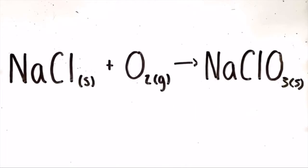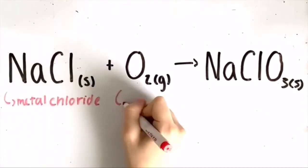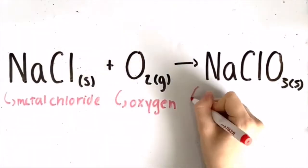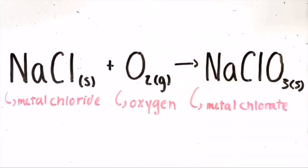An example of a metal chloride plus oxygen yielding a metal chlorate is sodium chloride plus oxygen gas yields sodium chlorate. Sodium chloride is our metal chloride, and oxygen gas is our oxygen, and sodium chlorate is our metal chlorate.